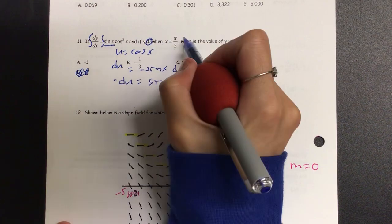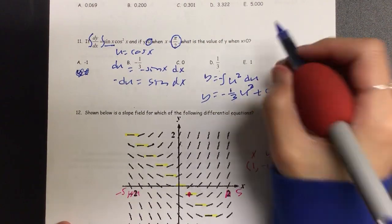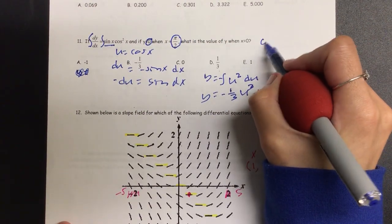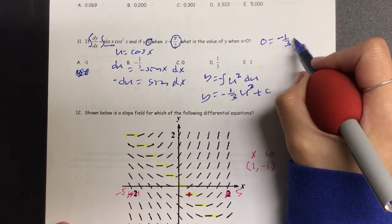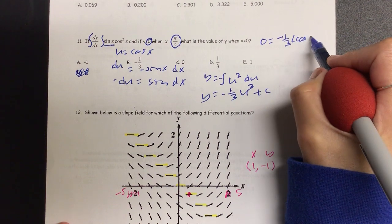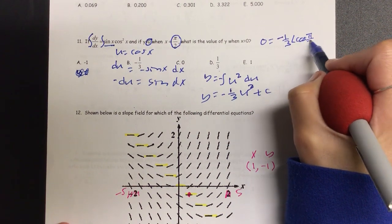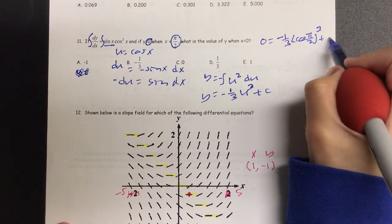They said when y equals zero, x is pi over two. So I could say y equals zero, but we have negative one third. Since our u was substituted with the cosine, let's put in cosine x. Instead of x, put pi over two. And then we have cubed plus c.